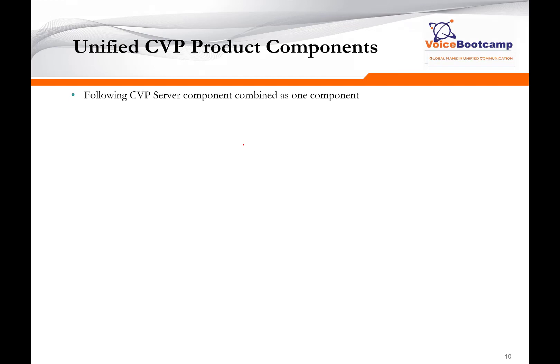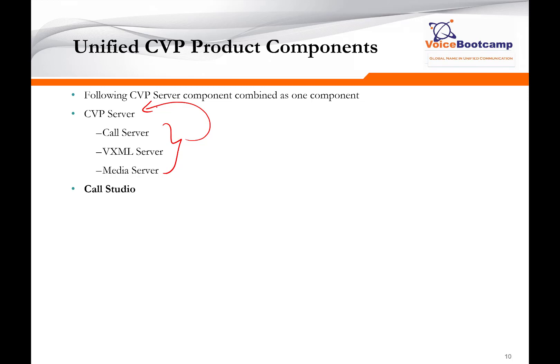The CVP main or core component — there are a few components that work together as one. When we say CVP server, that CVP server has a call server for call control, a VXML server for VXML execution of IVR scripts, and a media server hosting your prompts and audio files. These three combined are known as the CVP server. Call studio is another core component — it is basically an IDE or compiler, often known as a script editor, which allows you to create your application.